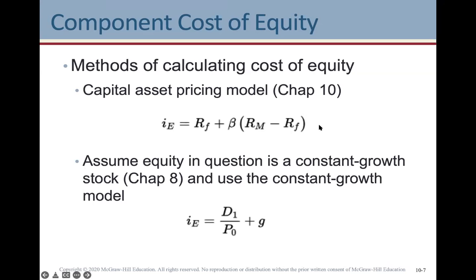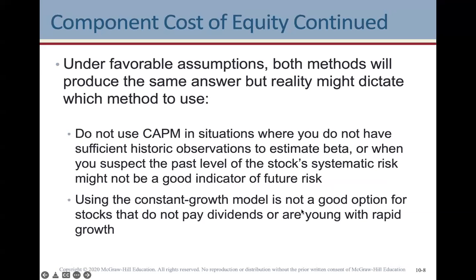In the real world you can look up beta, as people have done those calculations on different capital assets. In questions you might see historical data and need to calculate beta from that. CAPM is a good way to determine the cost of equity, but if you have a constant growth stock you can also use the constant growth model: iE equals dividend one divided by price zero, plus the growth rate. The growth rate must be constant in this model — it cannot change.